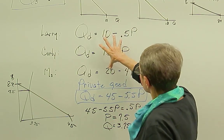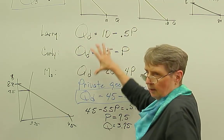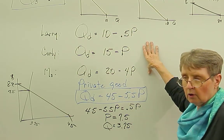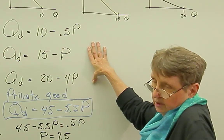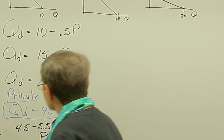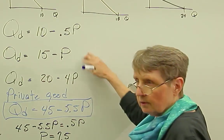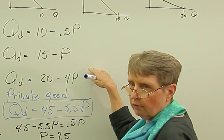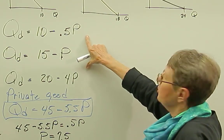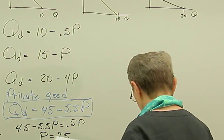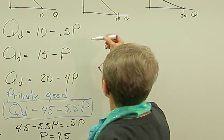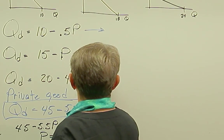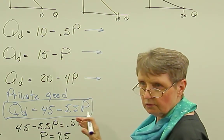Now, if we assume that instead of this being a private good, let's pretend that these demand curves now are actually the demand for some public good, streetlights. Then we have to sum these demand curves up, but we have to sum them up vertically instead of horizontally. So what I'm going to have to do is transpose these and use the inverse function.